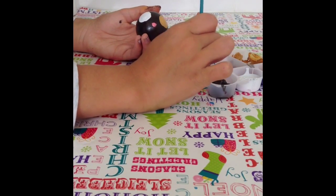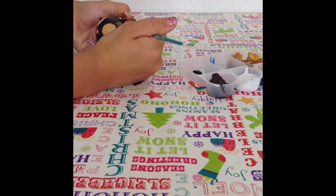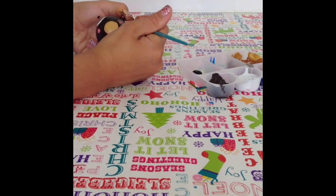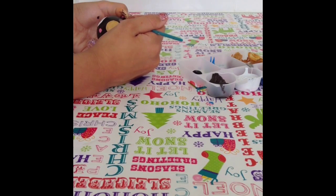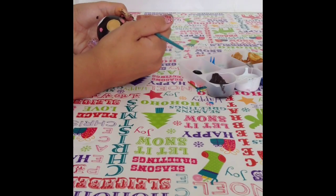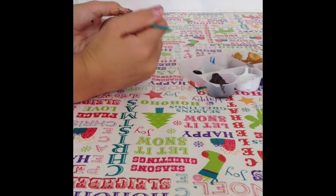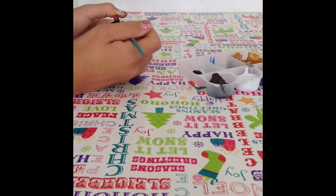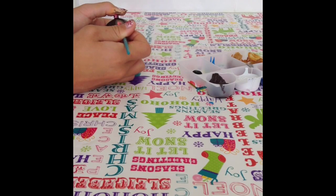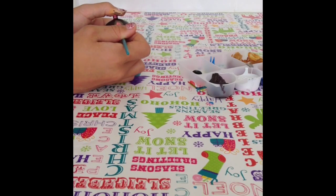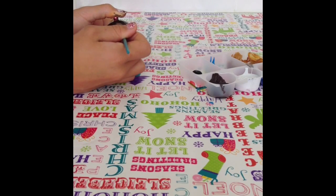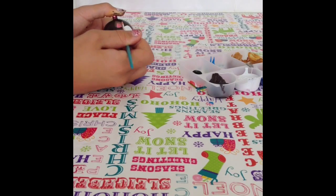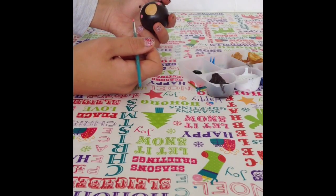Now with my light pink paint I'm going to draw little tiny triangles inside the bigger brown triangles for the inner ears.